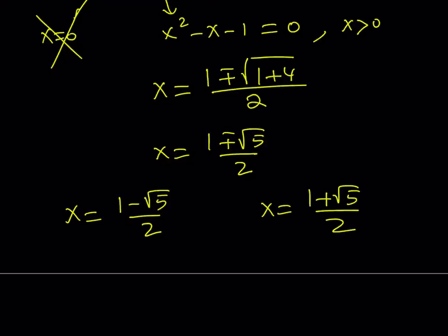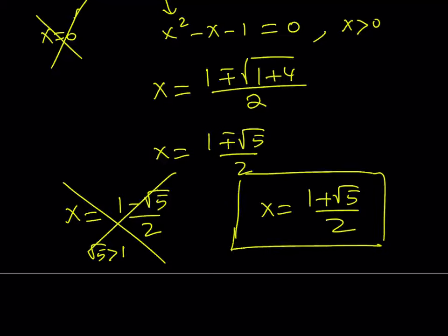Now notice that √5 is greater than 1. Therefore, this is a negative quantity. Unfortunately, we're not allowed to accept that. So the only solution that is left over is x = (1 + √5)/2, and that is the golden ratio. You can also use φ as a symbol. But I'm going to tell you a little bit about this expression.